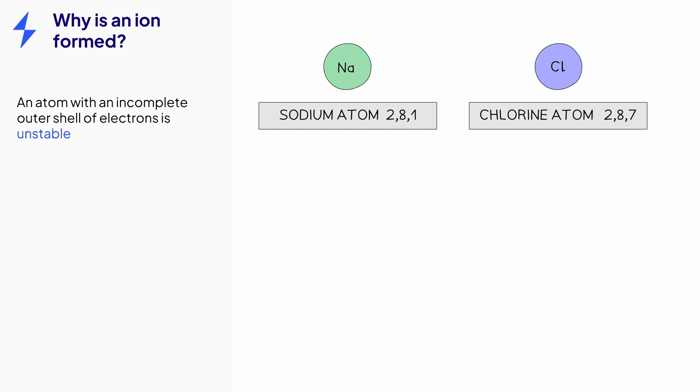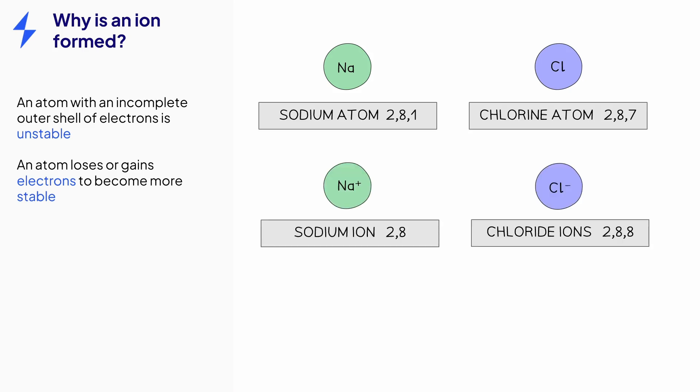To explain why ions are formed we need to consider the electronic configurations of atoms. Most atoms, including sodium and chlorine shown here, have an incomplete outer shell of electrons. This arrangement of electrons is not very stable. A full outer shell of electrons is a much more stable arrangement. To achieve this stable arrangement, atoms lose or gain electrons and we can see the electronic configurations of the sodium and chloride ion here, showing that they have a full outer shell.